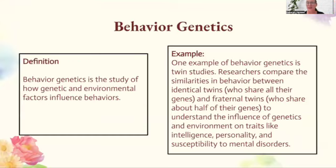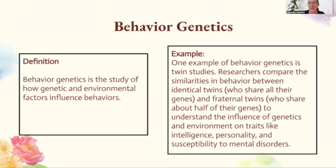We're going to start off with behavior genetics. Behavior genetics is the study of how genetic and environmental factors influence our behavior. One example is twin studies, where researchers compare the similarities in behavior between identical twins and fraternal twins to understand the influence of genetics and environment on traits like intelligence, personality, and susceptibility to mental disorders.